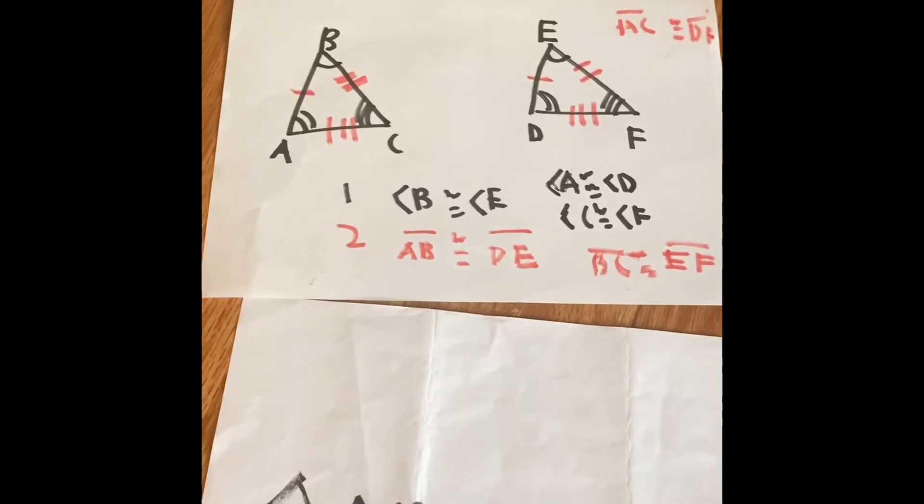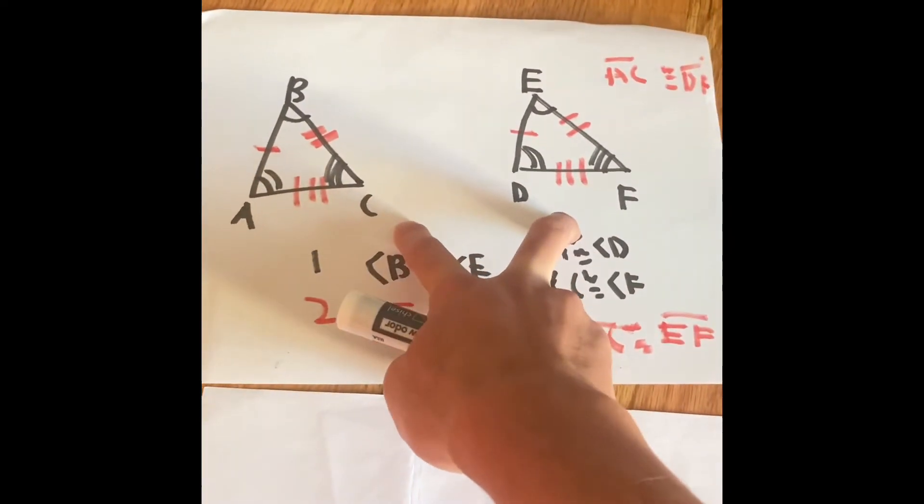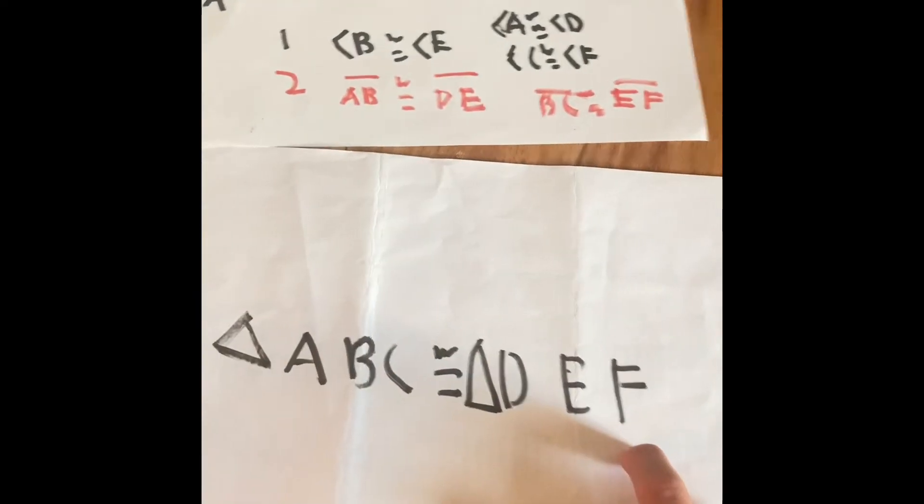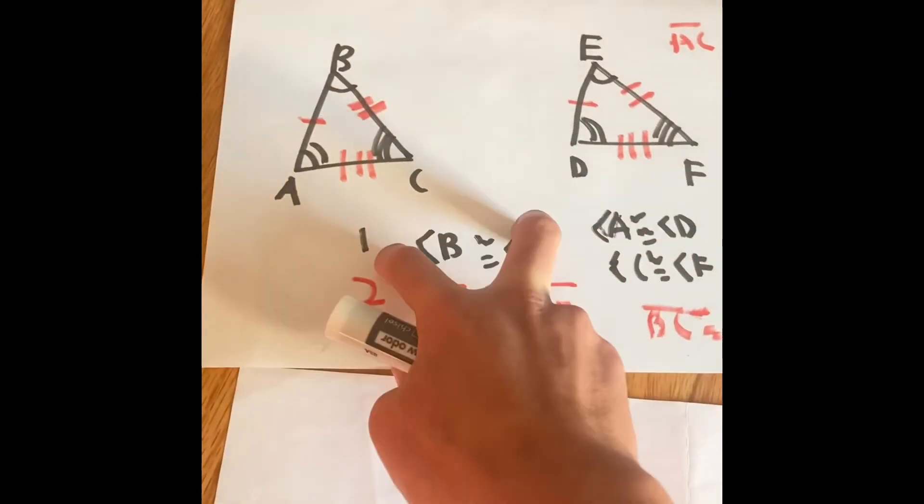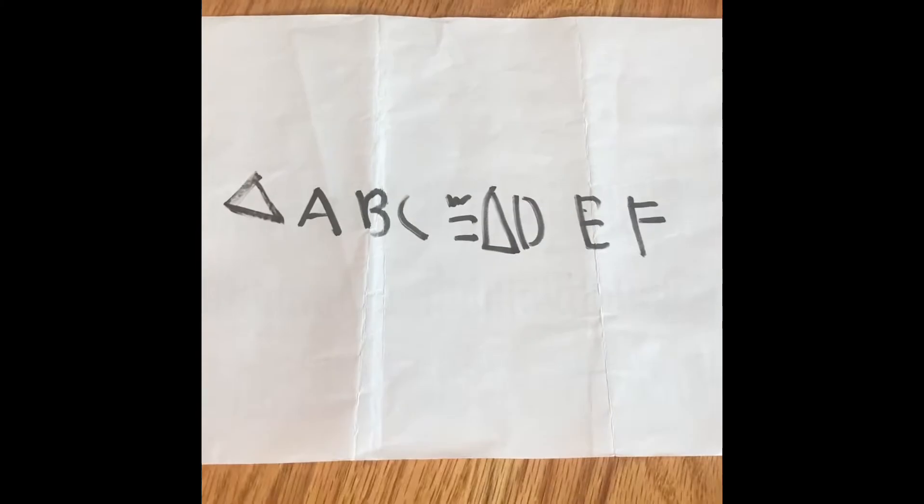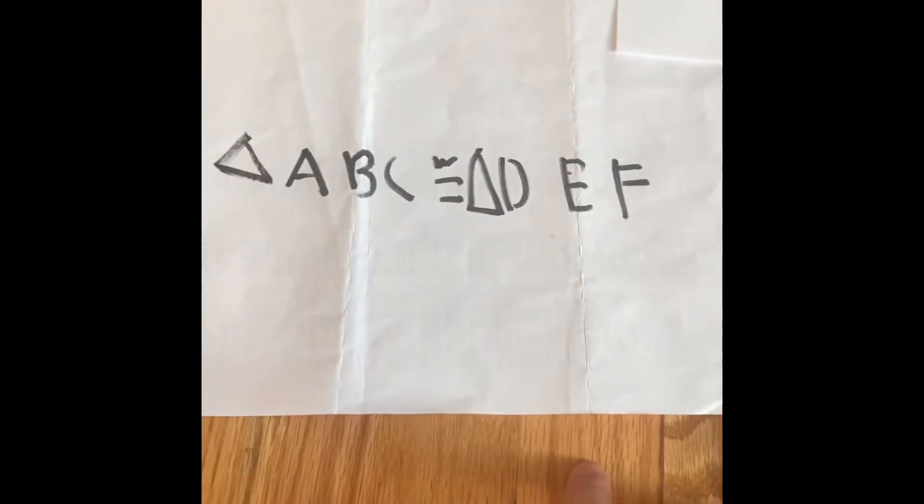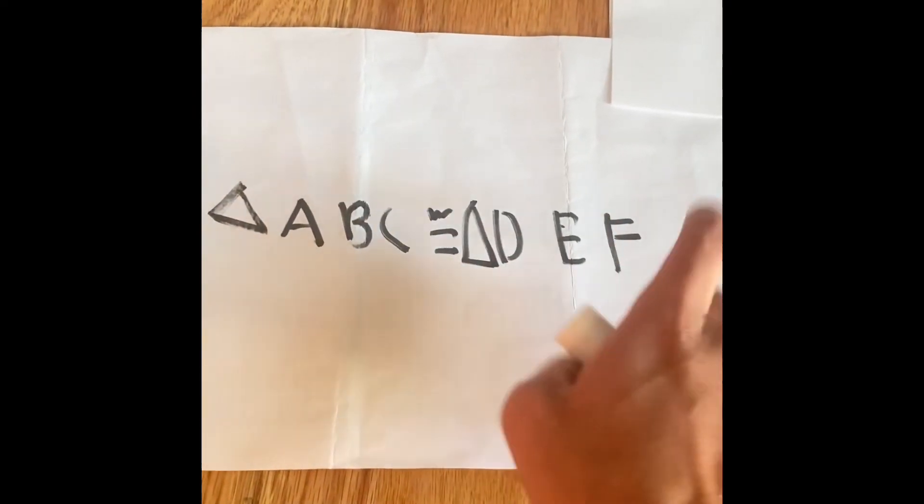Now here's challenge number two. Without the picture and only the statement, can we find the congruent figures without having this right here and the pictures? Let's see. So here's what's giving us triangle ABC is going to be congruent with triangle DEF.